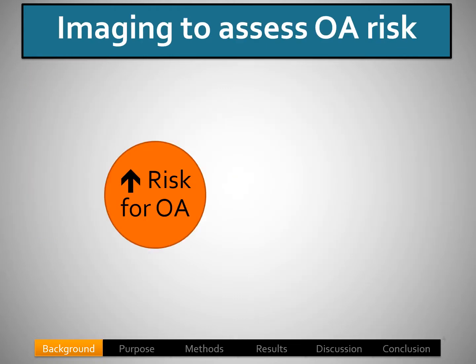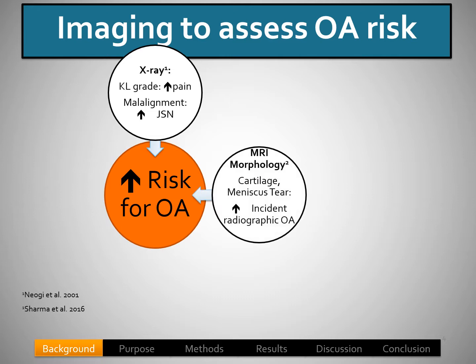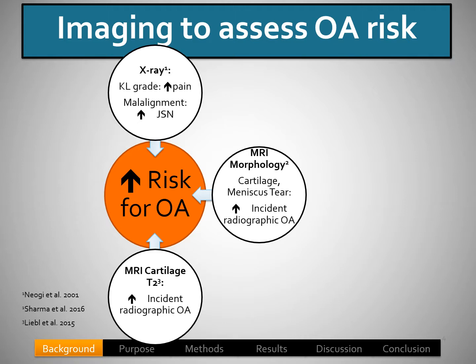Imaging can also be used to assess the risk for osteoarthritis. Studies have shown that X-ray-based Kellgren-Lawrence grade has been associated with increased pain. Malalignment has been associated with increased joint space narrowing. With MRI morphology, studies have shown that both cartilage and meniscal tears are associated with incident radiographic osteoarthritis. MRI cartilage T2 has also been shown to be associated with incident radiographic osteoarthritis.